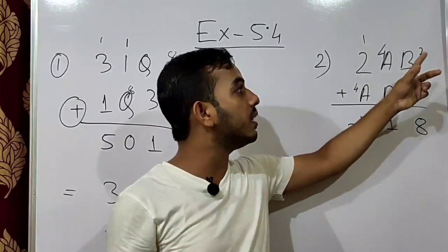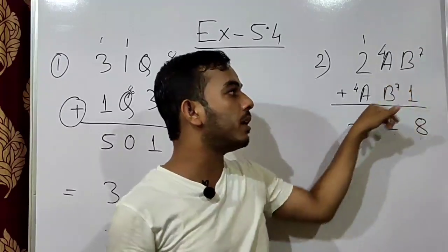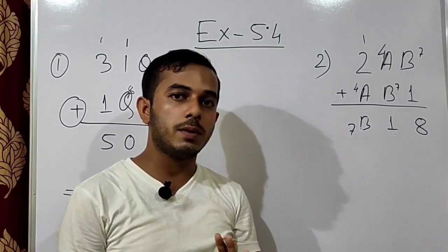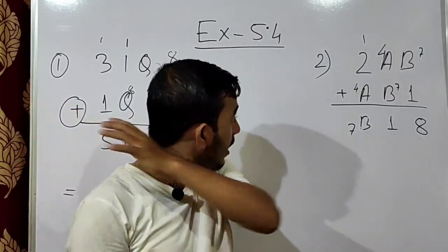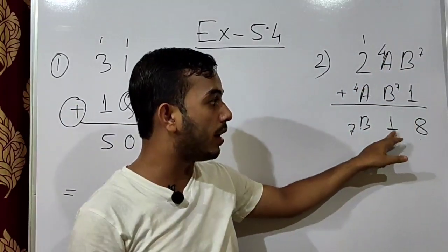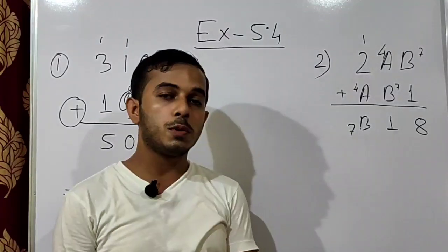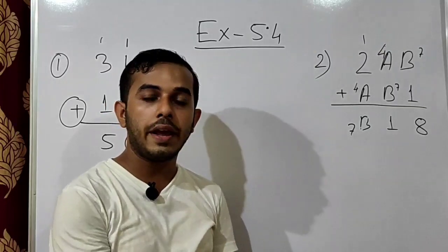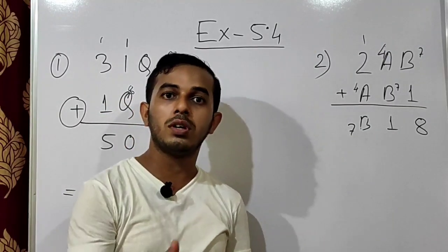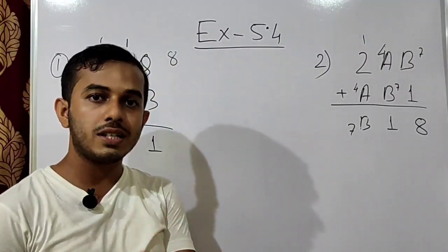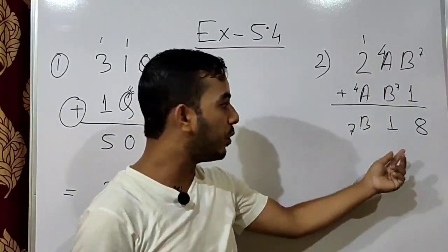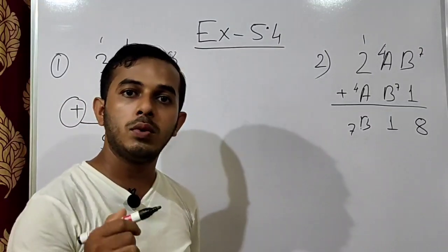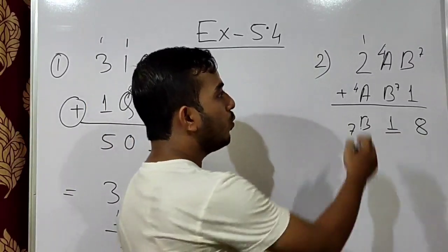So B is 7 and A is 4. Now let us verify. With A as 4 and B as 7: in the units column, 7 plus 1 is 8. In the tens column, 4 plus 7 is 11 — write 1 carry 1. In the hundreds column, 2 plus 1 is 3, and 3 plus 4 is 7. So the result is 718, which matches B18 with B equal to 7. Hence value of A is 4 and value of B is 7.